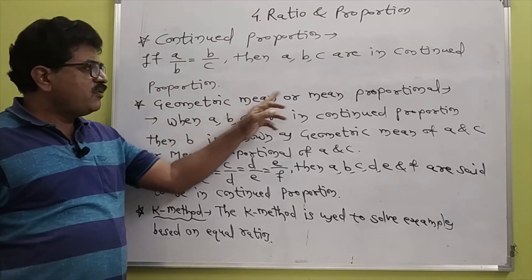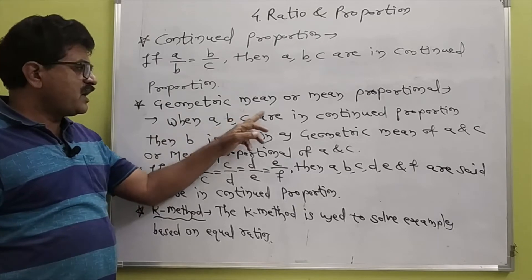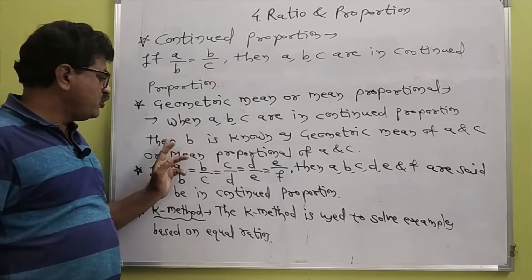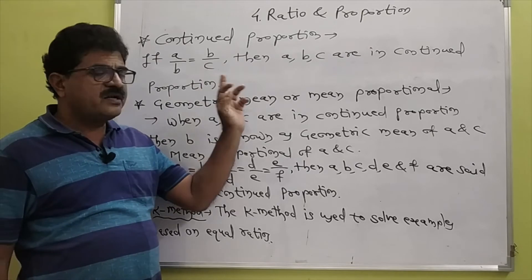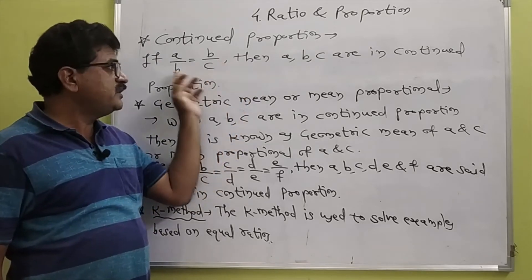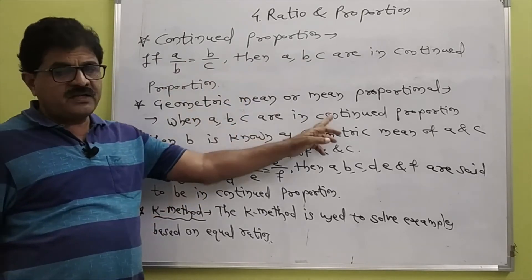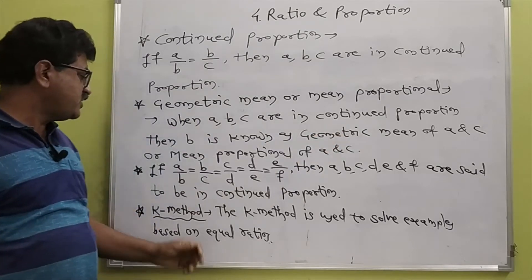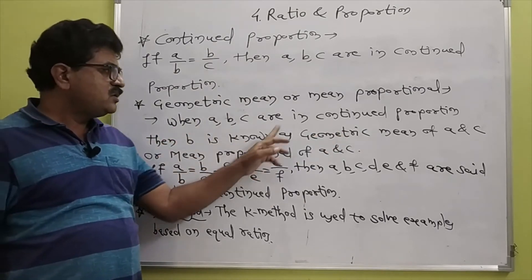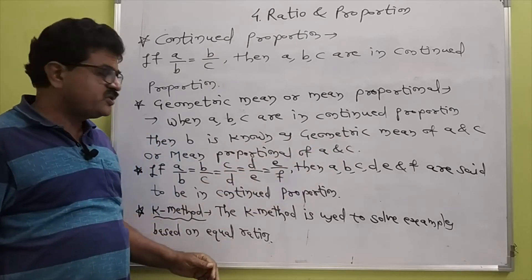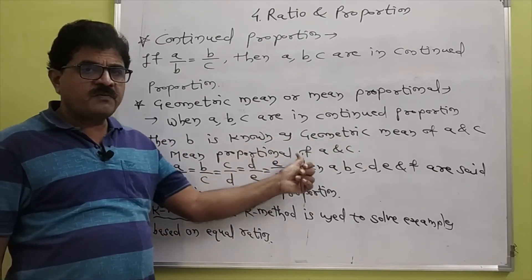Geometric mean, or mean proportional. When A, B, C are in continued proportion, then B is known as the geometric mean of A and C, or the mean proportional of A and C.